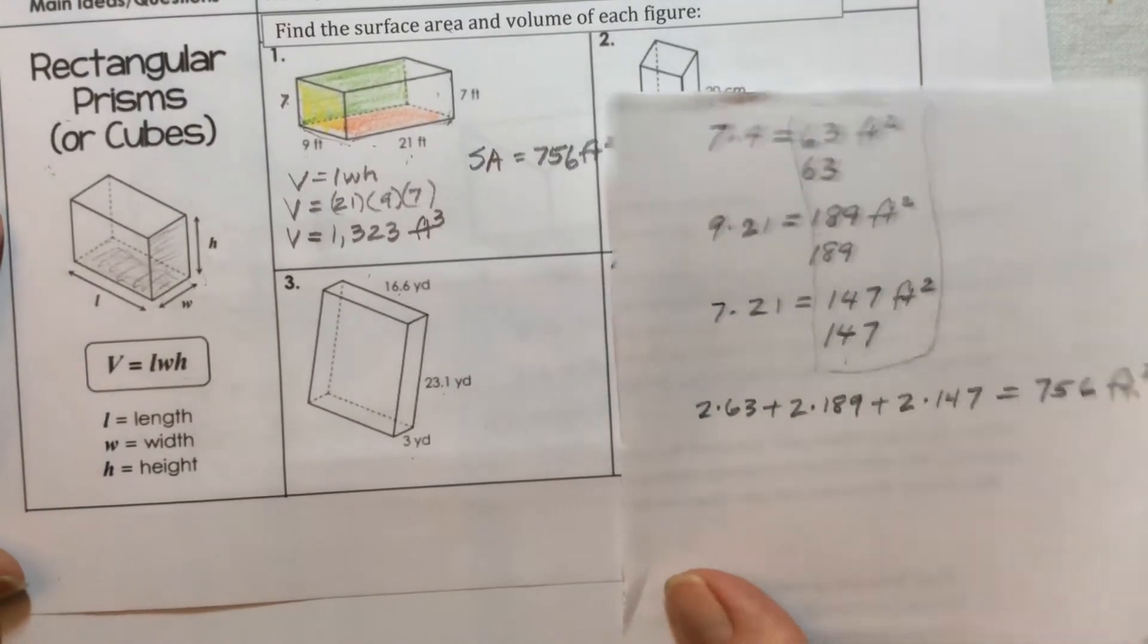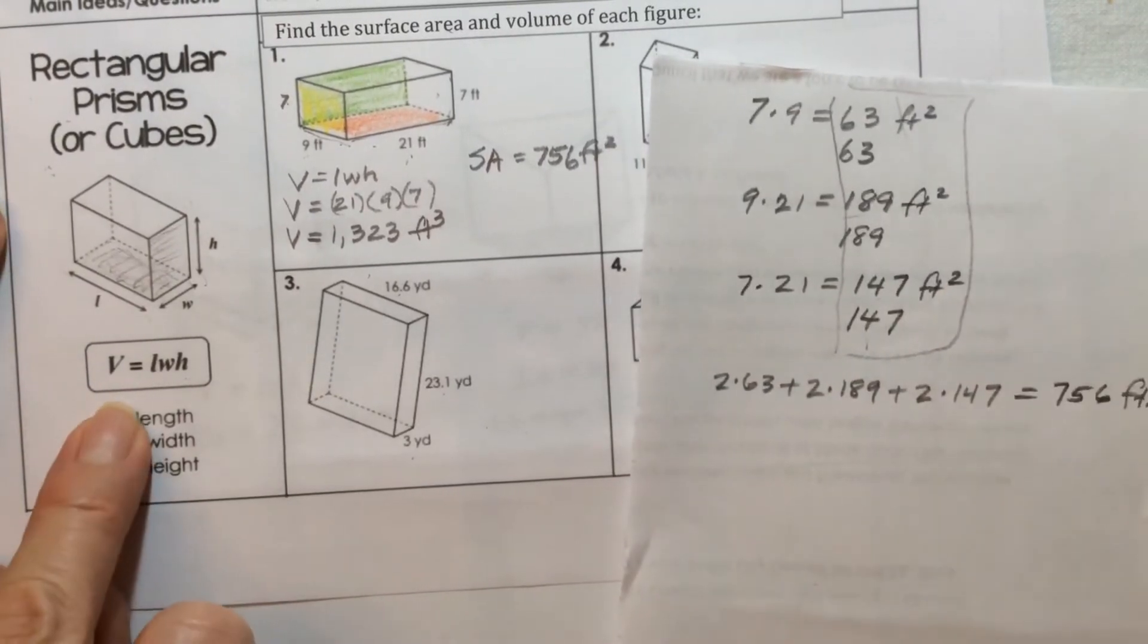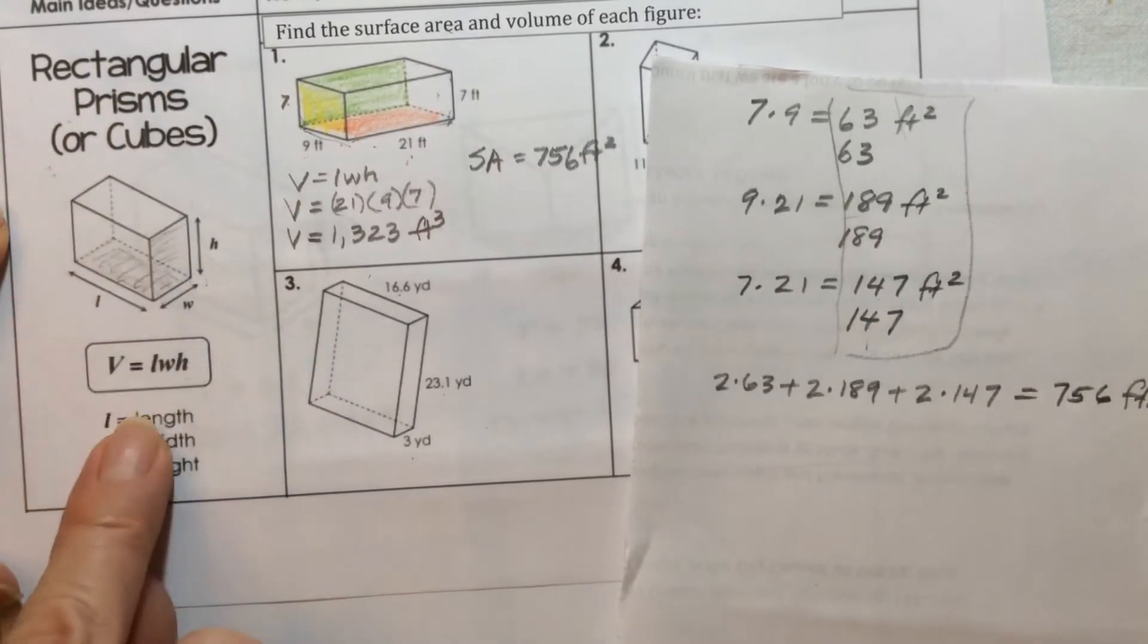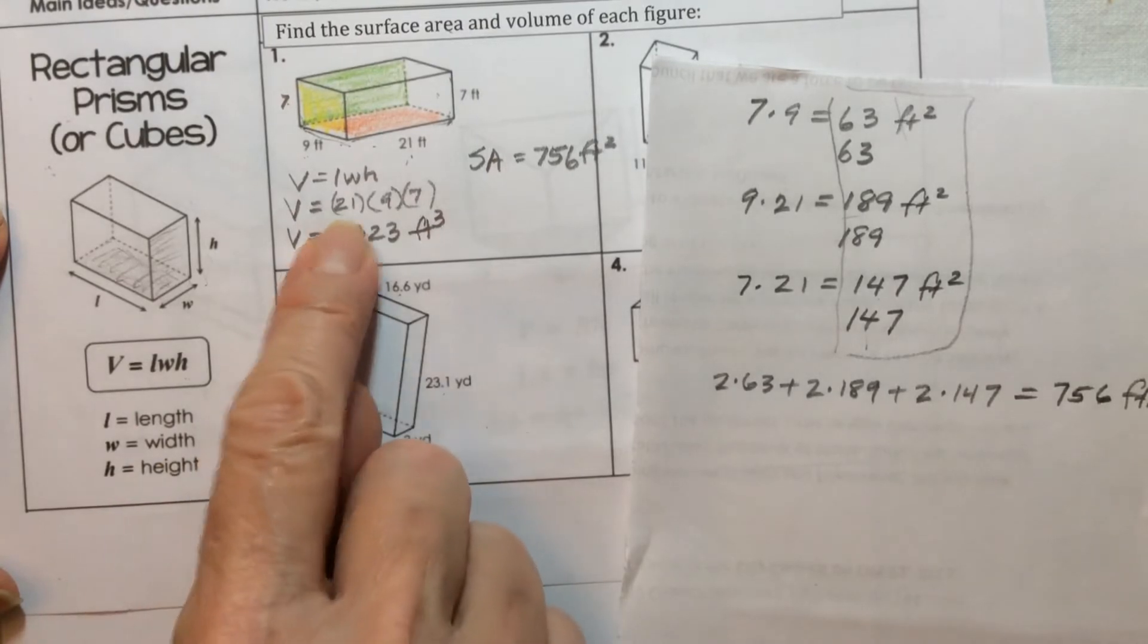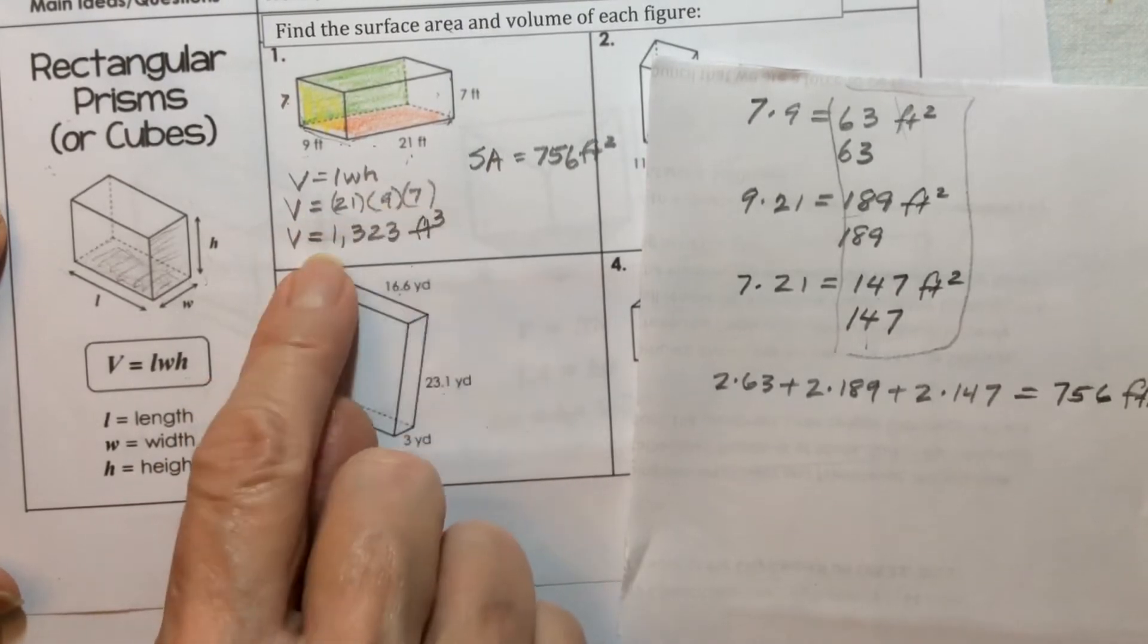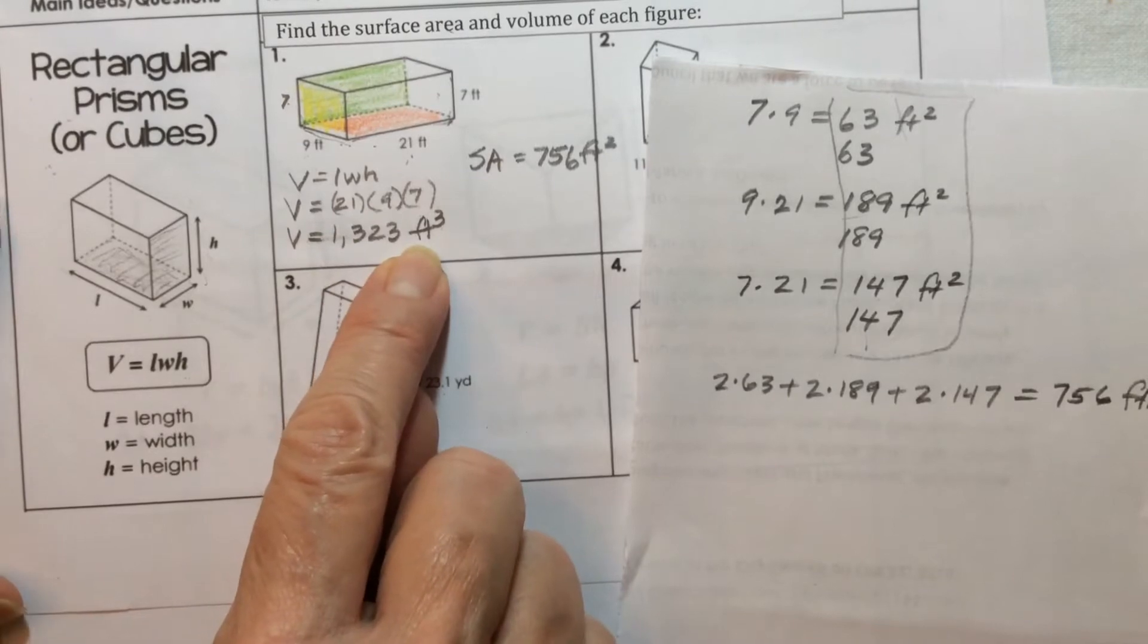So we saw that when we're calculating the volume for rectangular prisms, we could just take the length times the width times the height. Those three numbers multiply them together and get the total volume.